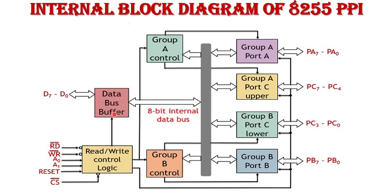The next block is the Data Bus Buffer, along with an 8-bit bidirectional data bus D0 to D7. The function of the data bus buffer is to store data temporarily. It provides communication between the data bus of the microprocessor and the data bus of the chip. The next block is Read/Write Control Logic, which has various control signals that decide whether the operation is a read operation or a write operation.